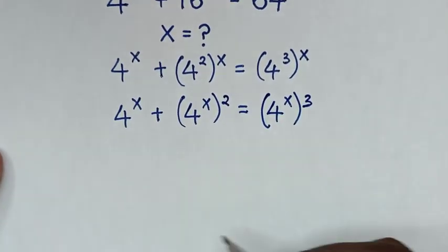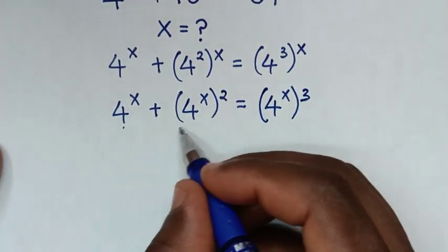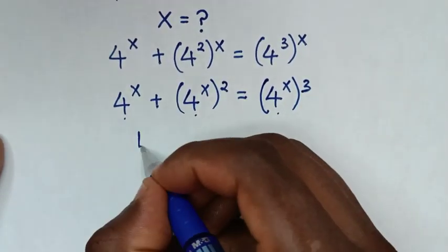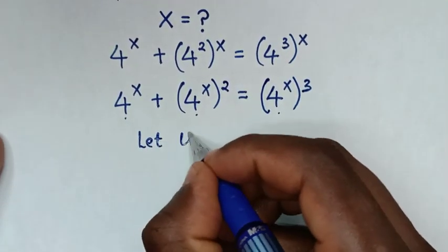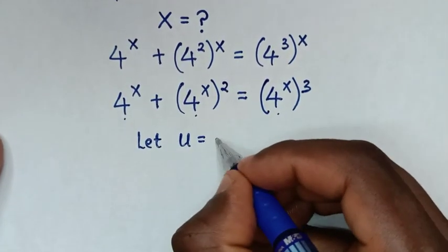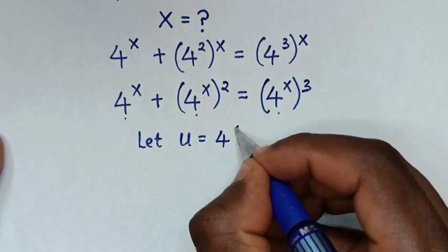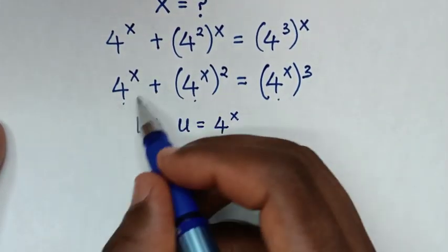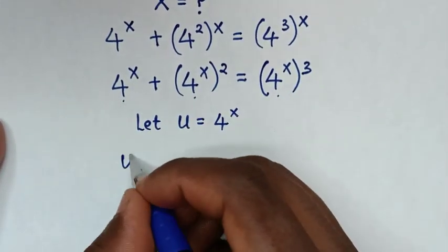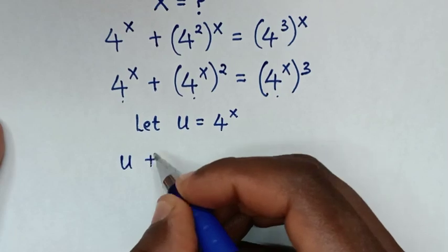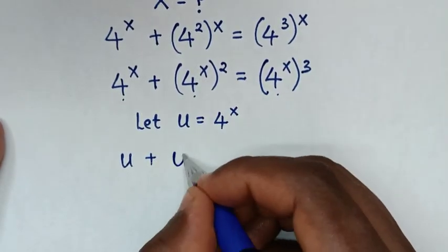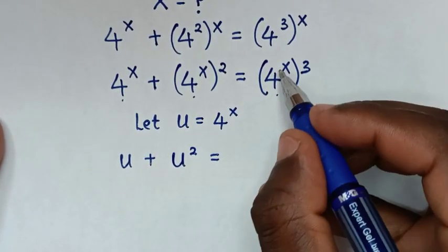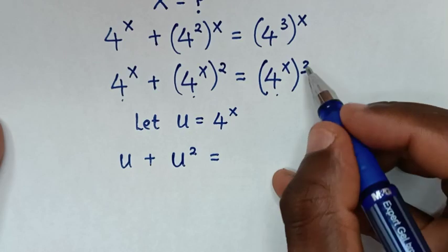Then in the next step, 4 power of x is common, so we let u equal to 4 power of x. Then it will be u plus u squared is equal to u power of 3.